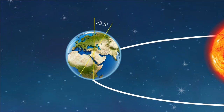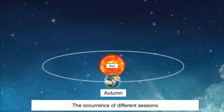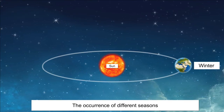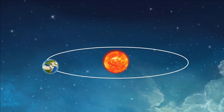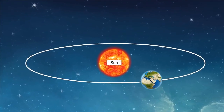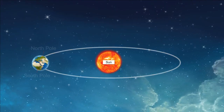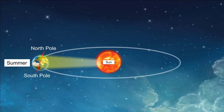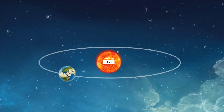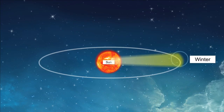The revolution of the earth and the tilted axis of the earth are two main factors that cause the occurrence of different seasons. As the tilted earth moves around the sun, a part of the earth is closer to the sun, which means that the other part is away from the sun. When the north pole is tilted towards the sun, the northern hemisphere experiences summer, such as in the month of June. When the north pole is away from the sun, the northern hemisphere experiences winter, such as in the month of December.